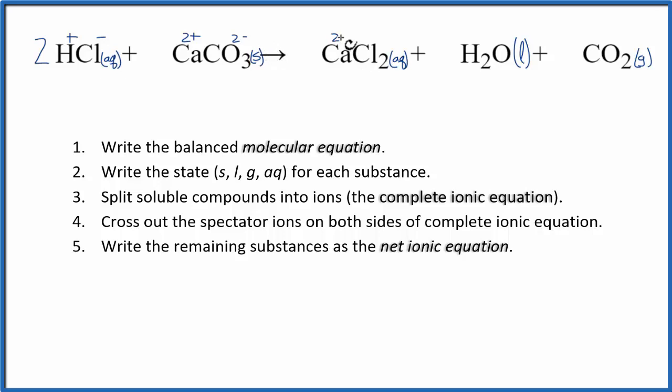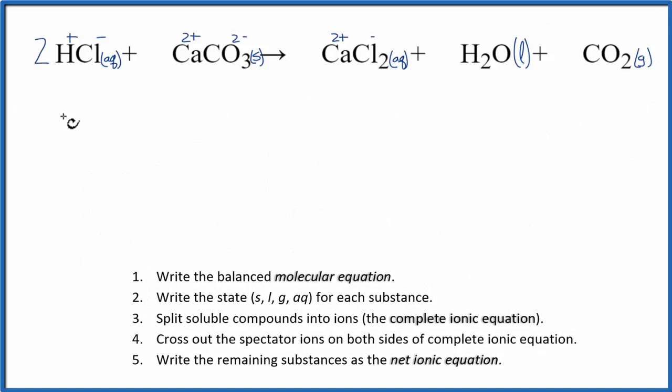Calcium is 2+, and chlorine is 1-. Water and CO2, we don't consider those to be soluble, so we won't do anything with those. So we split them apart. Let's write it all out now. This will be our complete ionic equation.